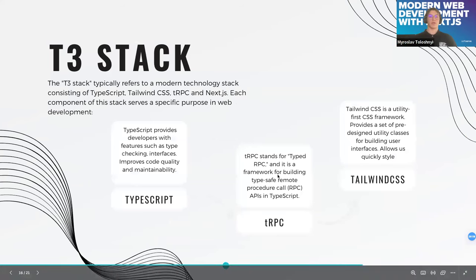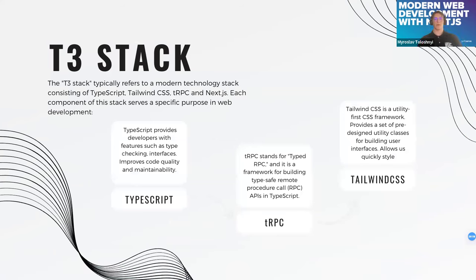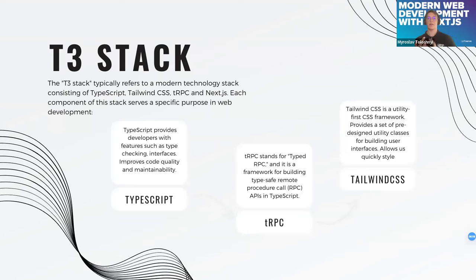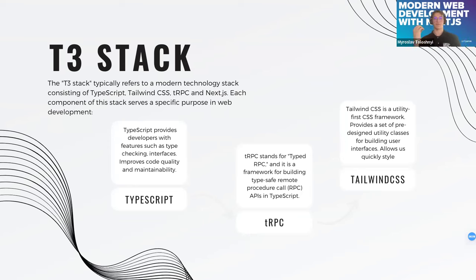The next major topic is the T3 stack, which refers to a modern technology stack using TypeScript, Tailwind, tRPC, and Next.js. TypeScript, which we are already familiar with, is a typed superset of JavaScript that adds optional static typing to the language, providing features like type checking, interfaces, generics, mapped types, and other powerful tools. tRPC stands for Typed RPC and is a framework for building typesafe remote procedure calls in TypeScript, focused on providing a developer-friendly experience for creating APIs that are strongly typed for both server and client.